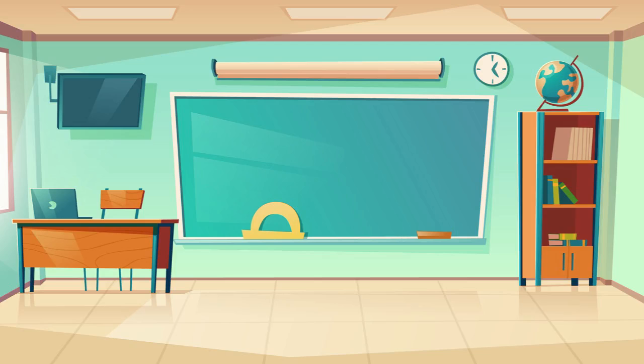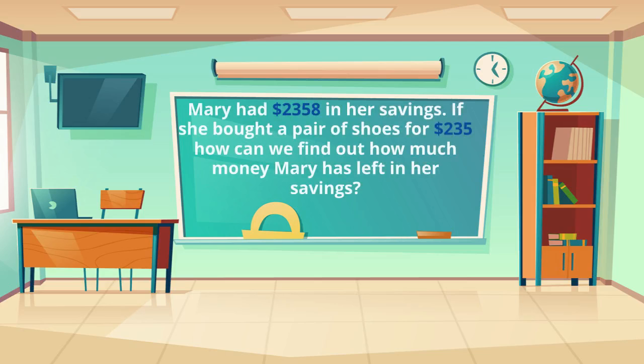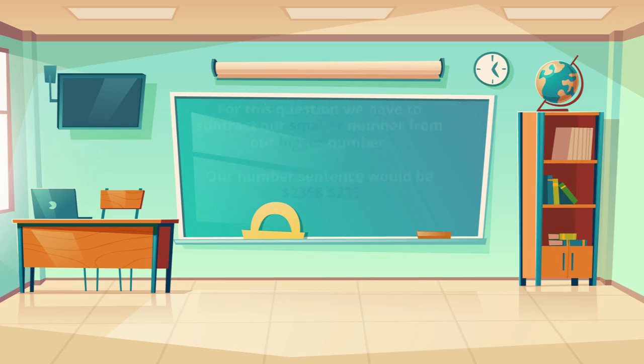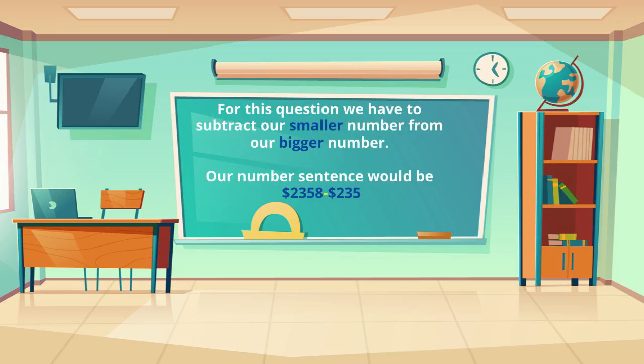For our next question, let's try a word problem. Mary had $2,358 in her savings. If she bought a pair of shoes for $235, how can we find out how much money Mary has left in her savings? Well, for this question we have to subtract our smaller number from our bigger number. Our number sentence would be $2,358 take away $235.